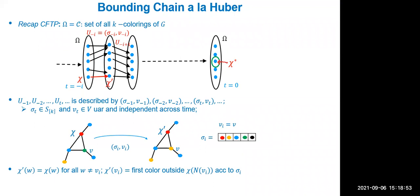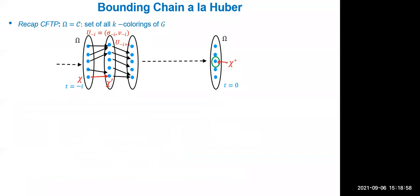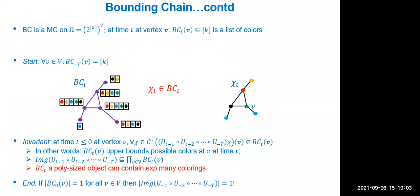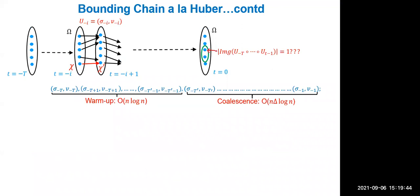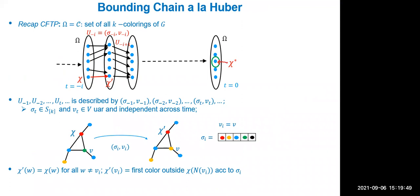Huber's algorithm runs in two phases: a warmup phase lasting order n·log(n) time, and a coalescence phase lasting the remaining time. At time minus T, the bounding chain initializes by assigning the full list of k colors at every vertex — this trivially satisfies the containment invariant. During the warmup, a random vertex is chosen, and the list at that vertex is updated to the first Delta plus one colors in the random permutation sigma.